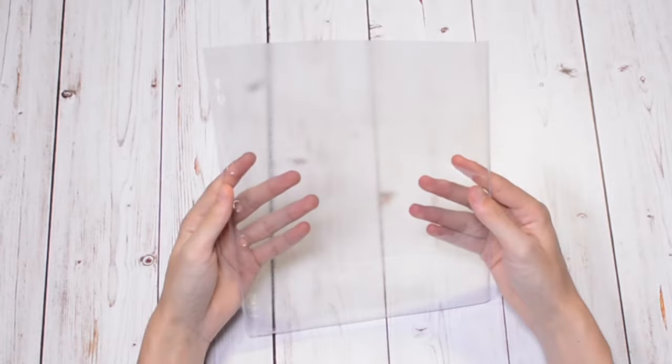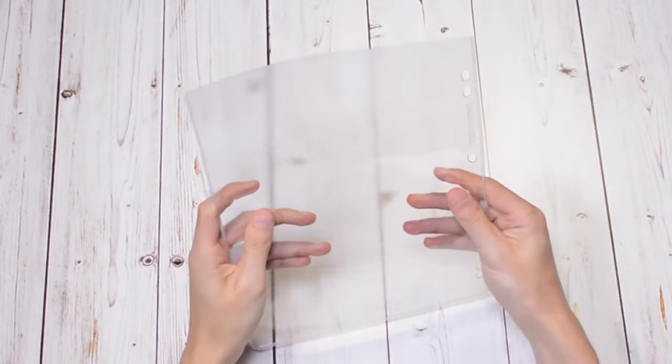Single PVC pockets are available from A5 size to A4, to half A4 and two thirds A4. All sizes are also available as double pockets.